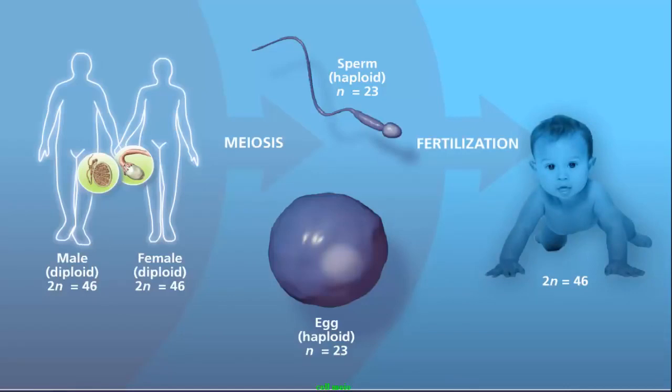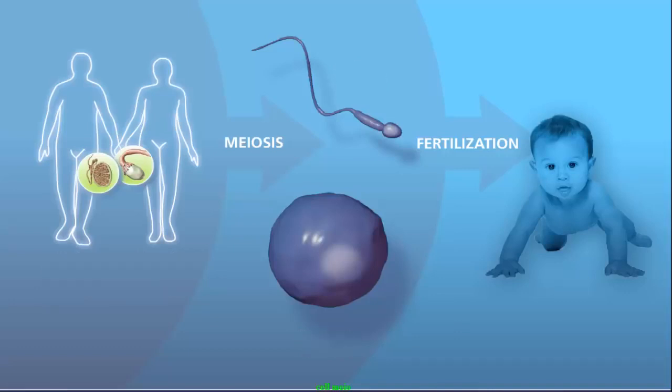The child receives half its chromosomes from its mother and half from its father. Because men and women produce millions of gametes, and the selection of gametes in fertilization is random, this contributes to genetic diversity. This explains why a child isn't identical to either parent.